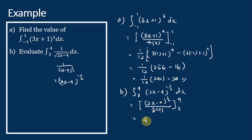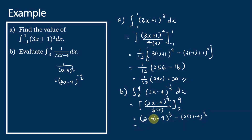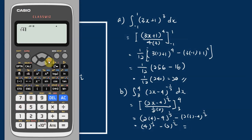Substituting the limits: (2 times 4 minus 4) to the power of one half minus (2 times 3 minus 4) to the power of one half. So 8 minus 4 equals 4 to the power of one half, minus 6 minus 4 equals 2 to the power of negative one half. Using the calculator, the answer is 0.5858.